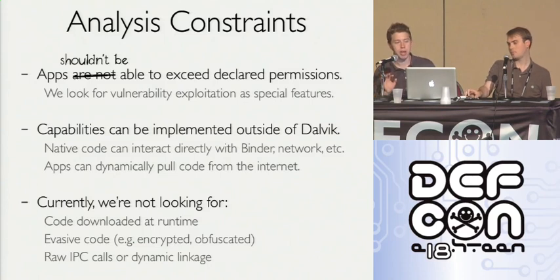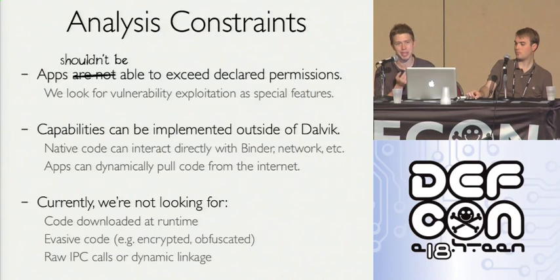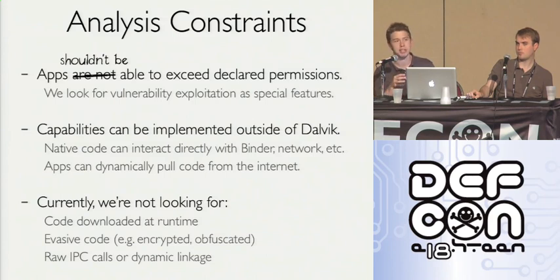It's important to understand what we can and can't do. We're assuming applications don't get around the permission model — if you're using local privilege escalation exploits, you have bigger problems than stealing a phone number. Capabilities can be implemented outside of Dalvik: you can bring in native code to Android applications and download ARM code from the Internet and execute it. In static analysis we won't see that. We're also not looking at code downloaded at runtime, encrypted code, or dynamic linkage like reflection or raw binder IPC calls. We're looking at the vast majority of apps that use the framework as built.